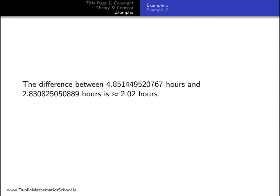The difference between the largest number and the smallest number is approximately 2.02 hours. This represents the difference between the person who spends the most time online and the person who spends the least amount of time online.